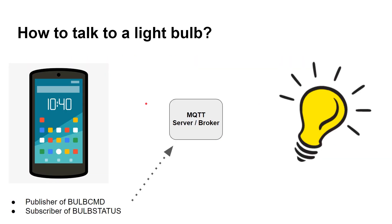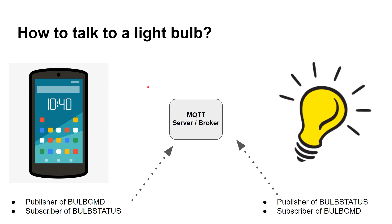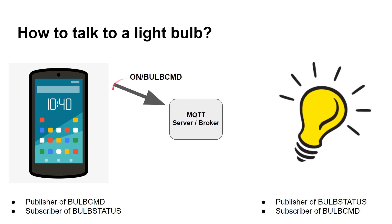Let's look at that as a diagram. Here's the smartphone — it says it's a publisher of bulb command and a subscriber of bulb status. The light bulb says it's a publisher of bulb status and a subscriber of bulb command. The smartphone sends an on command inside the bulb command topic, and because the light bulb is a subscriber to that topic, it arrives at the light bulb.